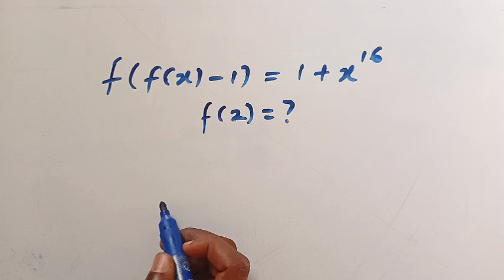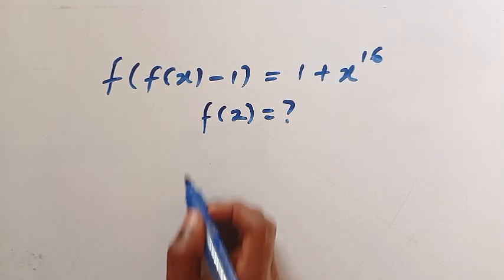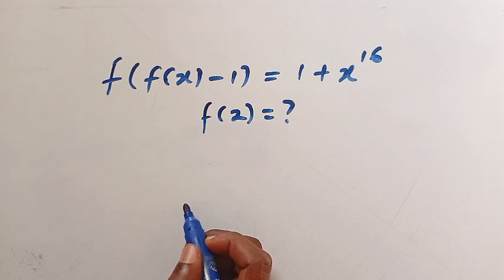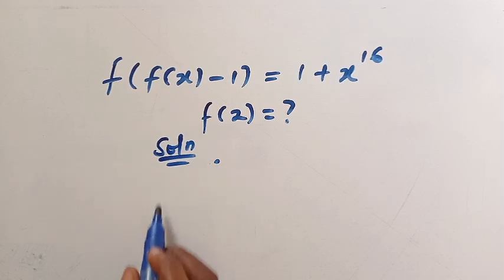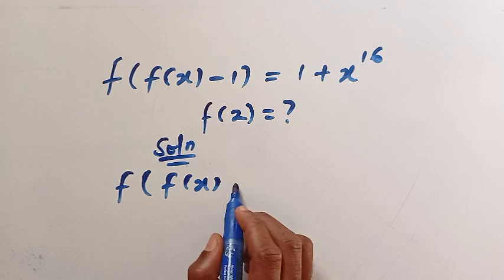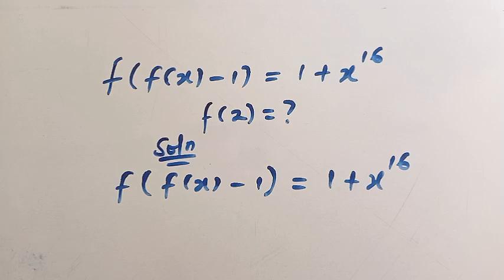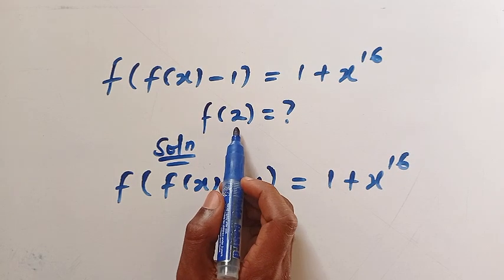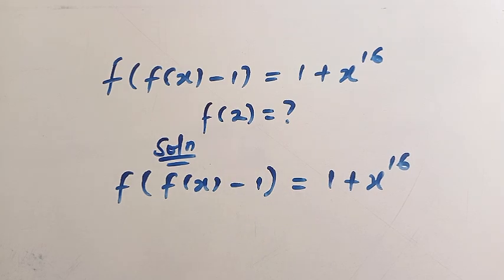Is there a template method we can use to solve this? I don't think so, but we might have one — drop it in the comment box. But this is how I solve this problem step by step. So let's get into solving it. From the given question, we have f of f of x minus 1 equals 1 plus x to the power of 16. We need to get f of x, then substitute the value 2 for x. Some might have guessed the answer by now, but let's start using the guess method.